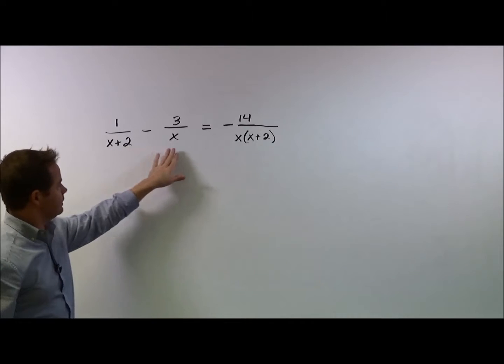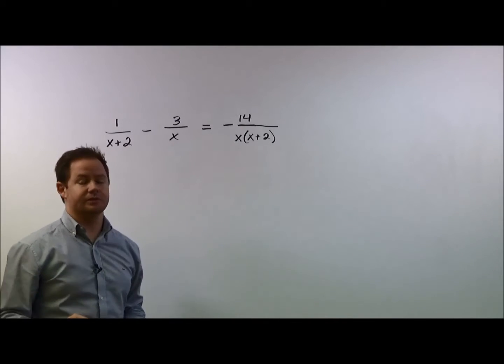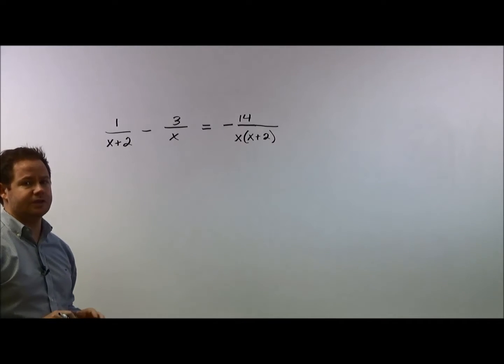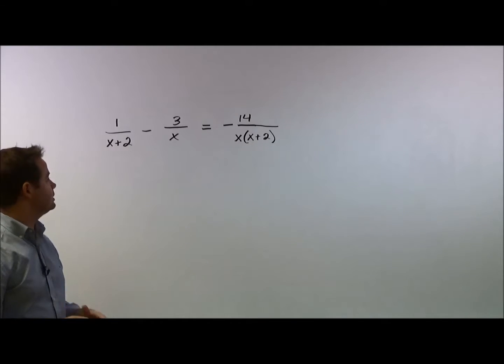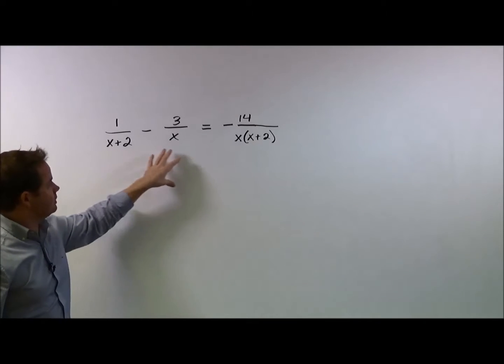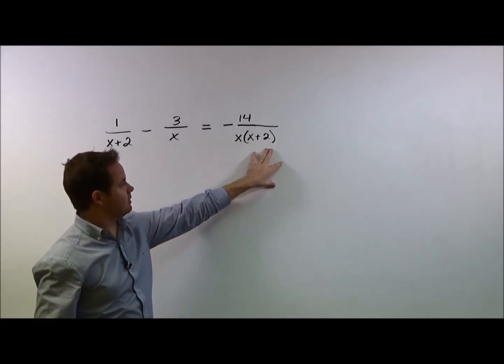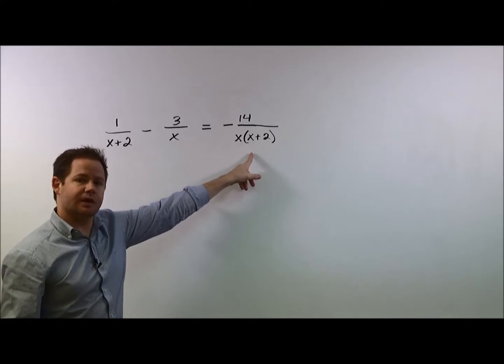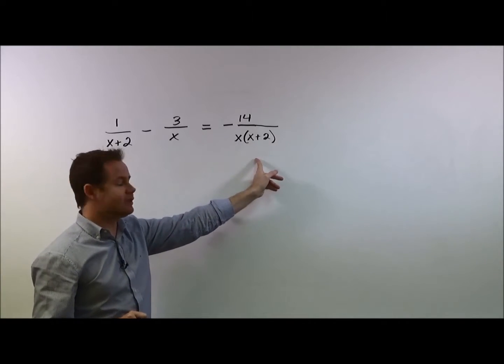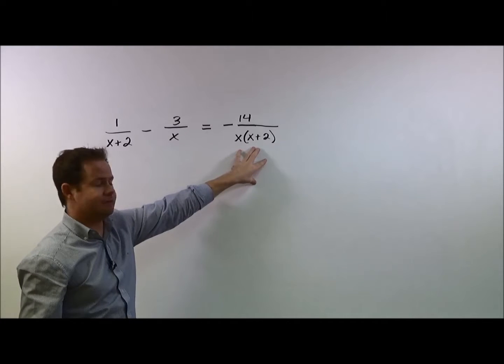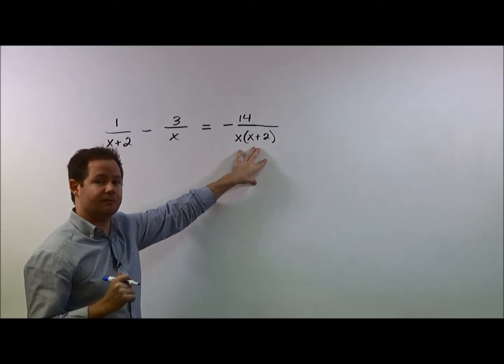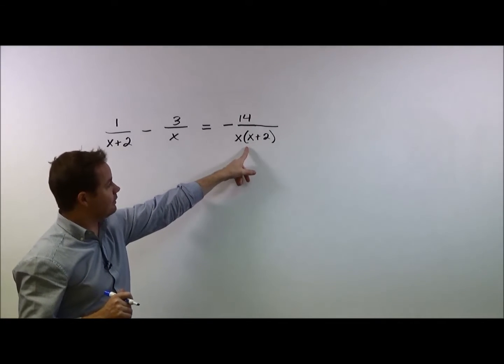So here we have x plus 2, x, and then x times x plus 2 for our three fractions in this problem. And what we want to notice is that x plus 2, x and x times x plus 2, this is the most complex denominator. And most of the time when you see something like that, this will give you a hint as to what the common denominator might be.